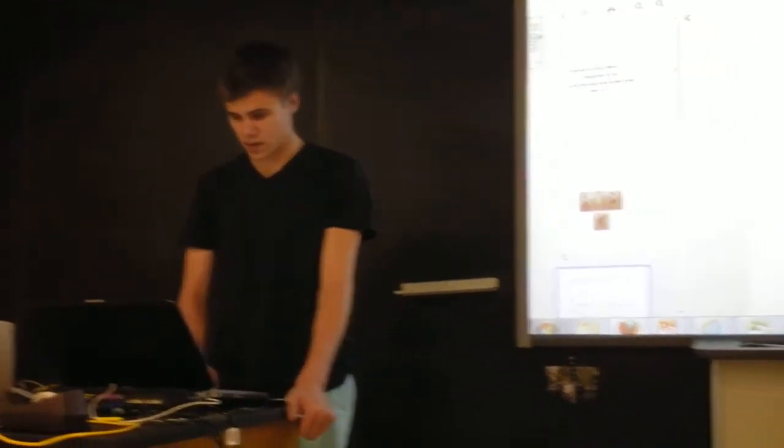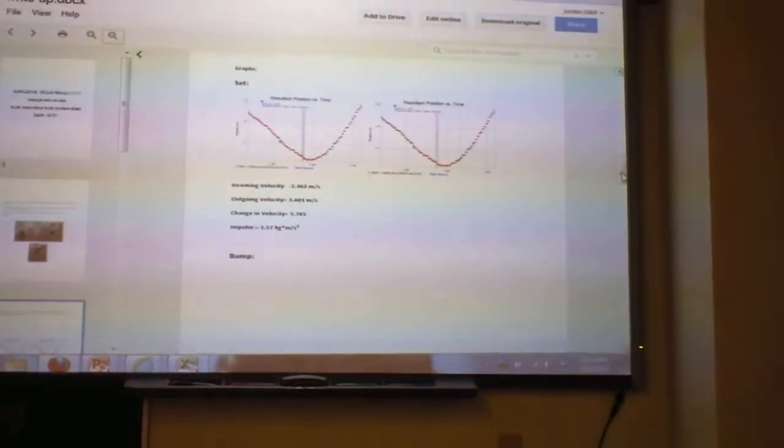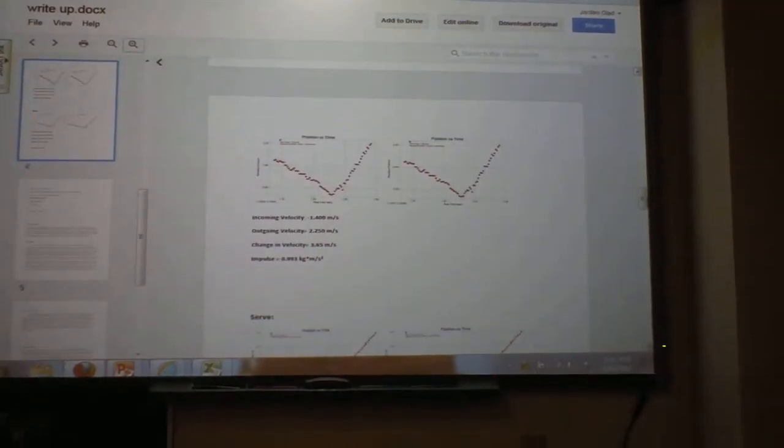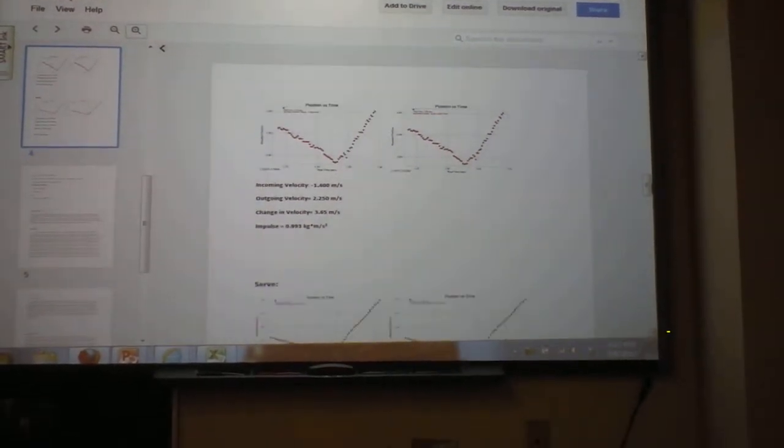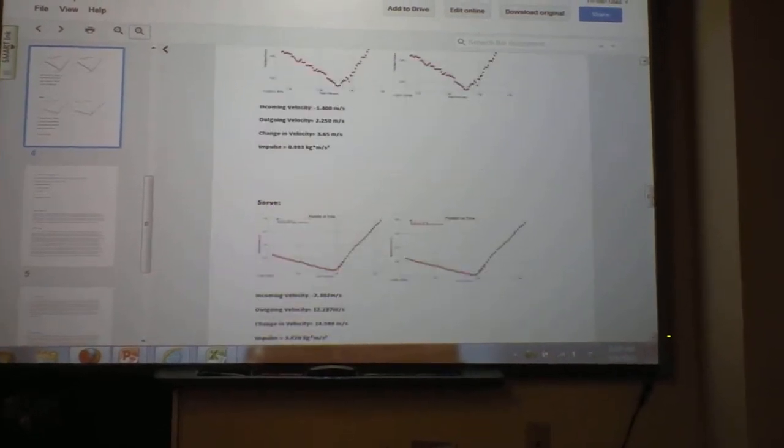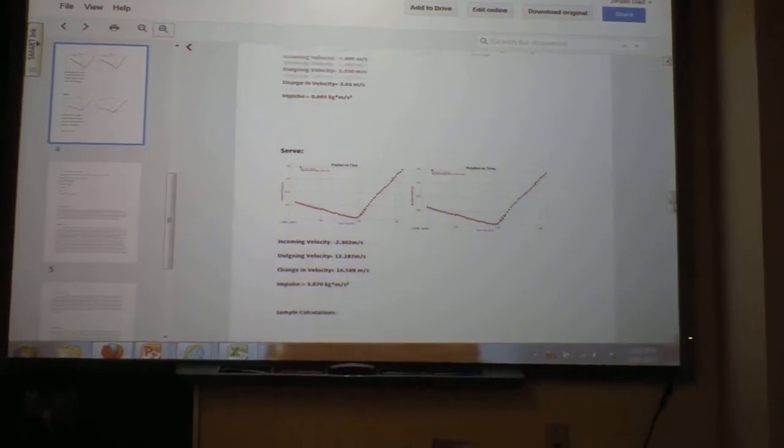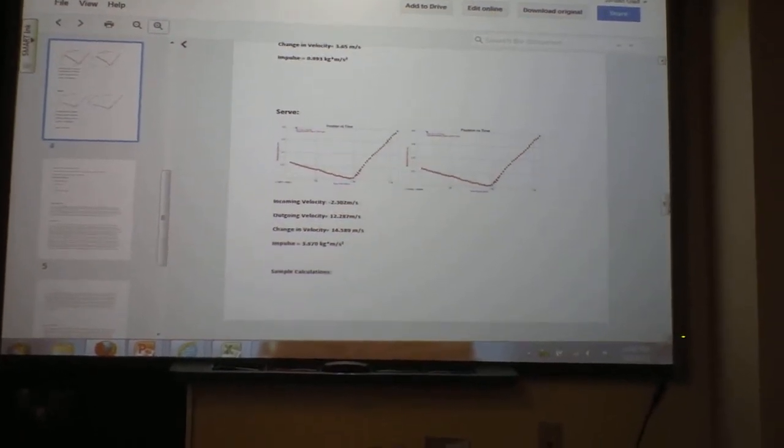So, this one is a set, and it only has impulse of 1.57, and then the bump is 0.93, or 993, but I'm not sure if that's right. I haven't seen this one yet. And then the impulse of the serve is much higher.